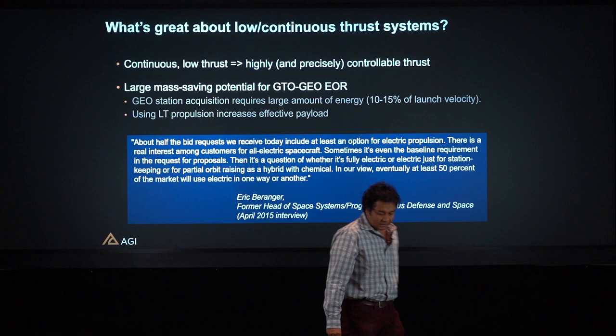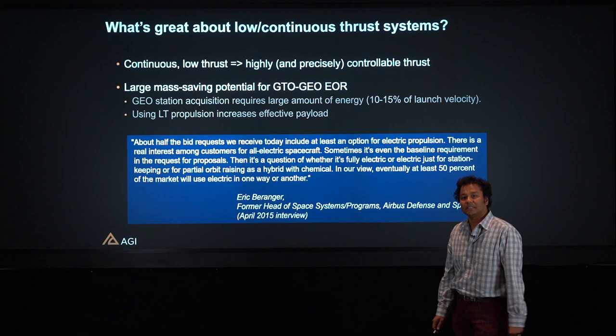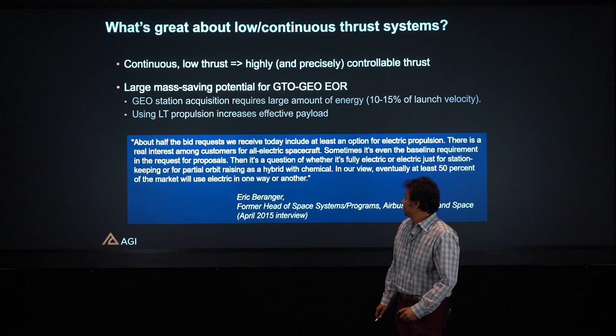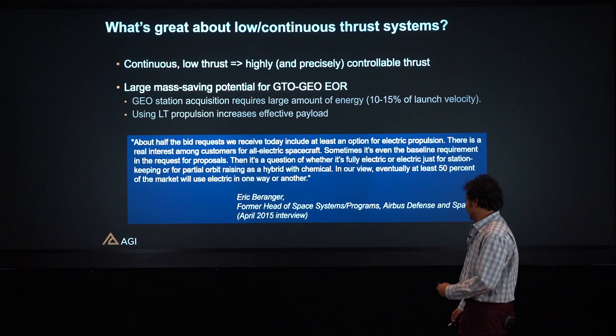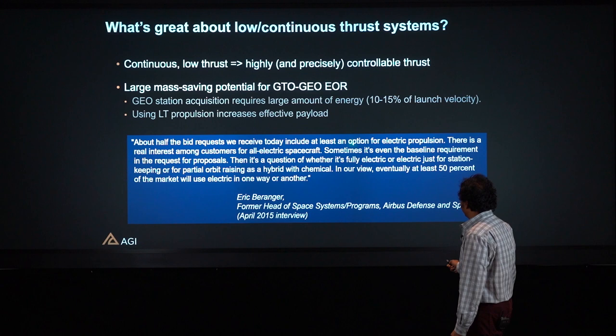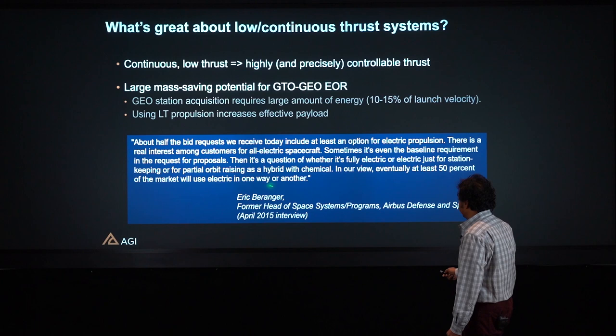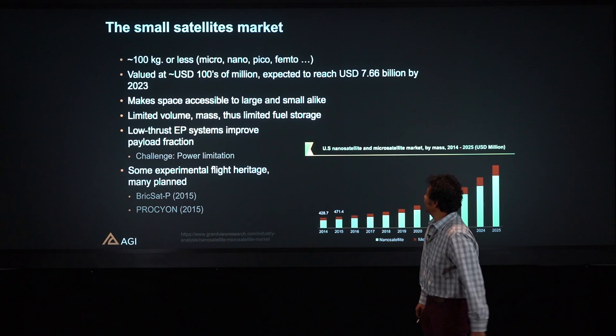Another advantage of continuous Low-Thrust is controllability. It's not as if an impulse has been given and the spacecraft propagates open-loop beyond that — Low-Thrust implies continuous controllability of the thrust, and feedback control laws can be designed for TCMs, or trajectory correction maneuvers. As Eric Berenger, then head of the Space Systems Program of Airbus Defense and Space, said in an April 2015 interview: about half the bid requests received included at least one option for electric propulsion, and in his view eventually at least 50 percent of the market will use electric propulsion one way or the other.